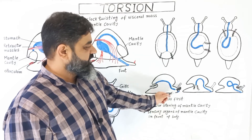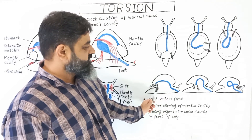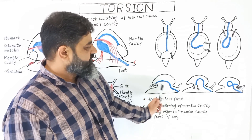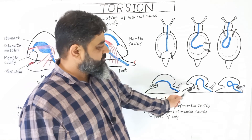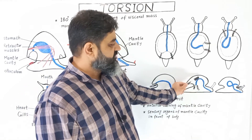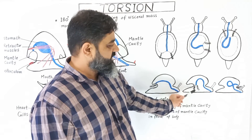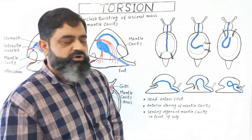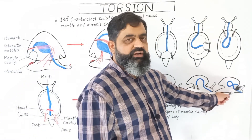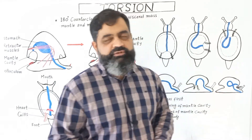In this diagram you can see the anterior portion of the snail, with gills present on the posterior surface, the mouth, mantle cavity, and anus. When torsion takes place, in the first step the body rotates 90 degrees and the digestive system develops to the lateral side. The gills come to the lateral side, and at the end of torsion the digestive system becomes U-shaped, the mantle cavity transfers to the anterior surface along with the gills, and torsion is completed.